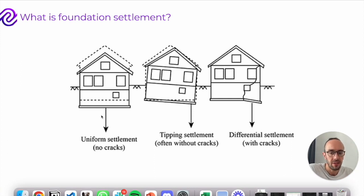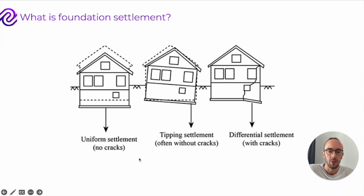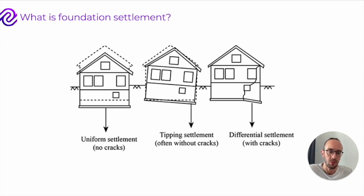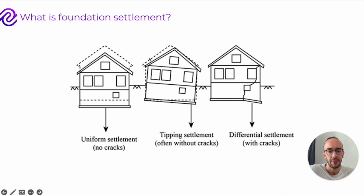This can happen in several different ways: uniform settlement, where the entire foundation sinks uniformly; tipping settlement, where the foundation tips to one side; and differential settlement, where just one part of the foundation actually dips — perhaps there's a soft pocket of ground causing just that area to drop. This can cause damage and issues to the building and its facade.